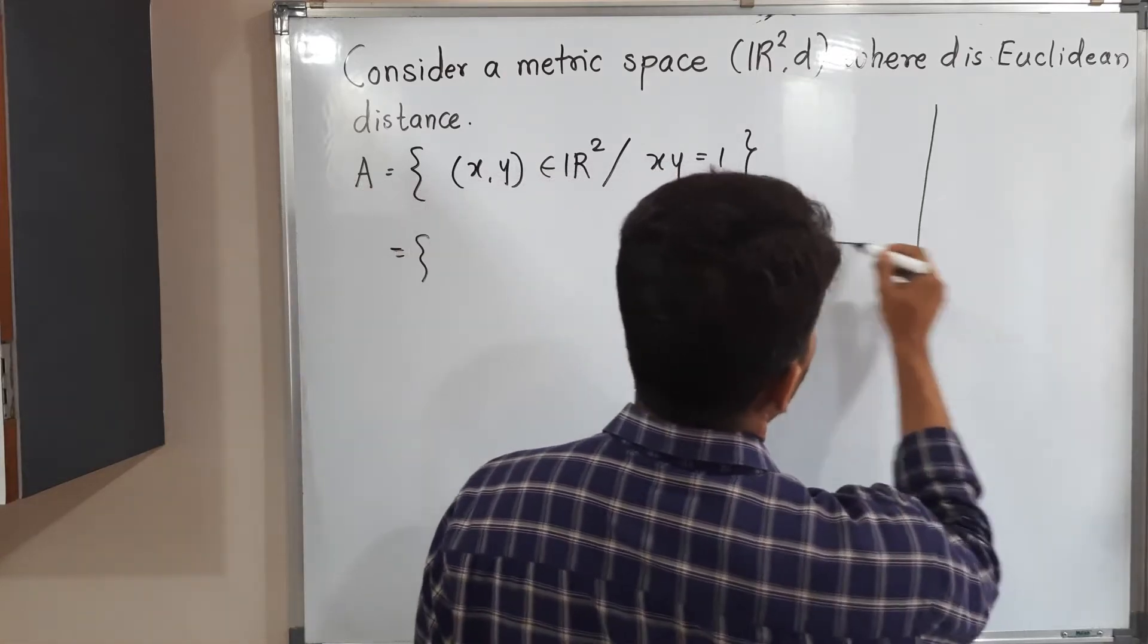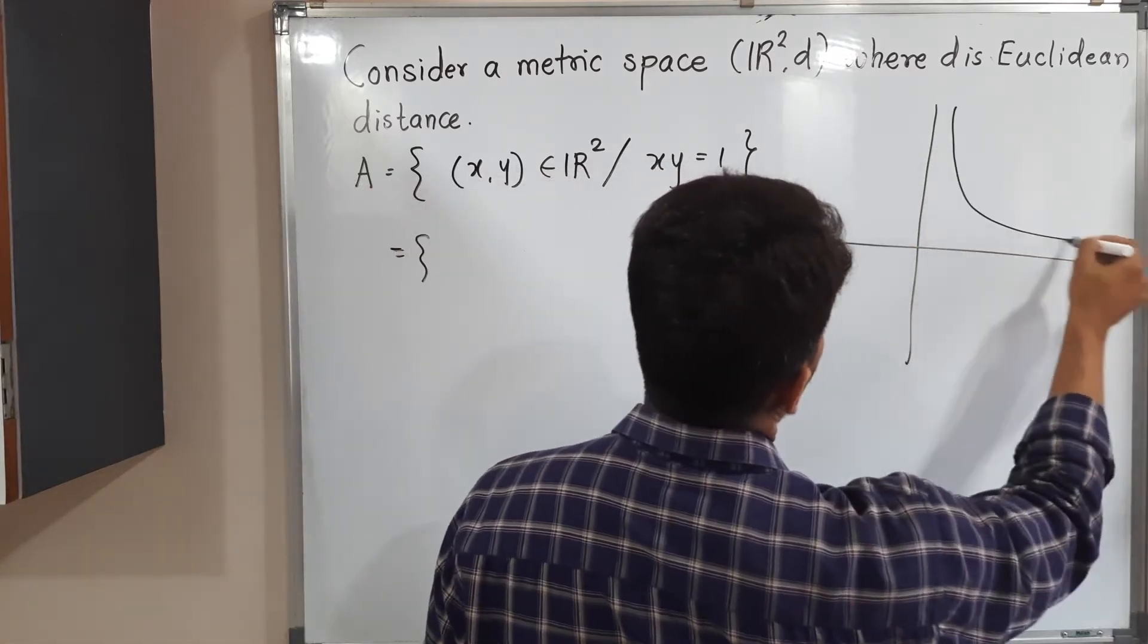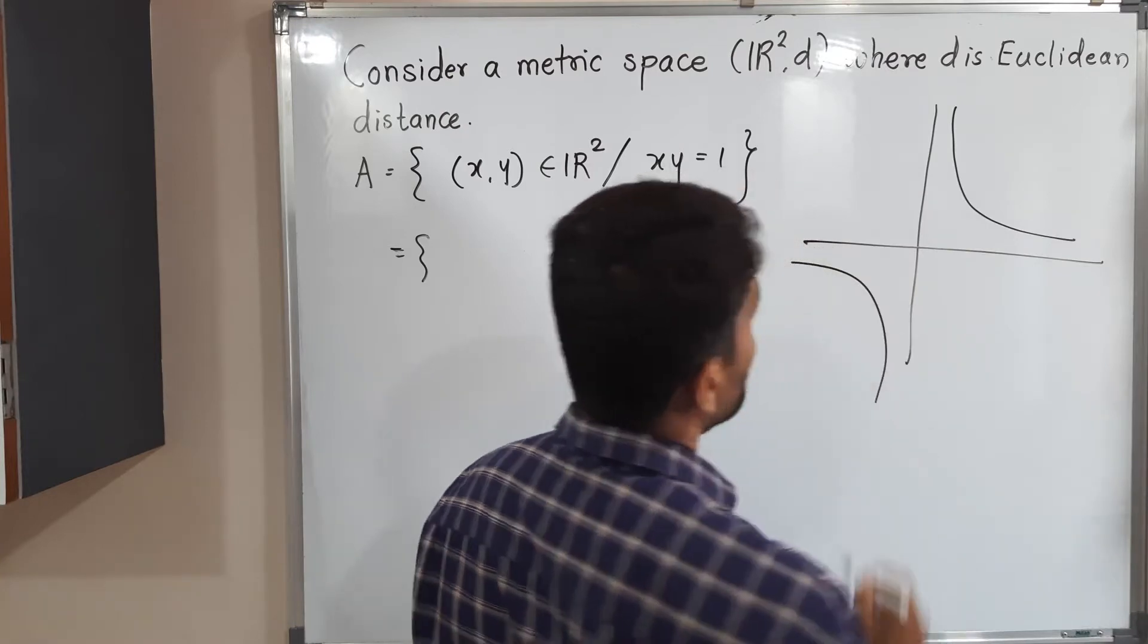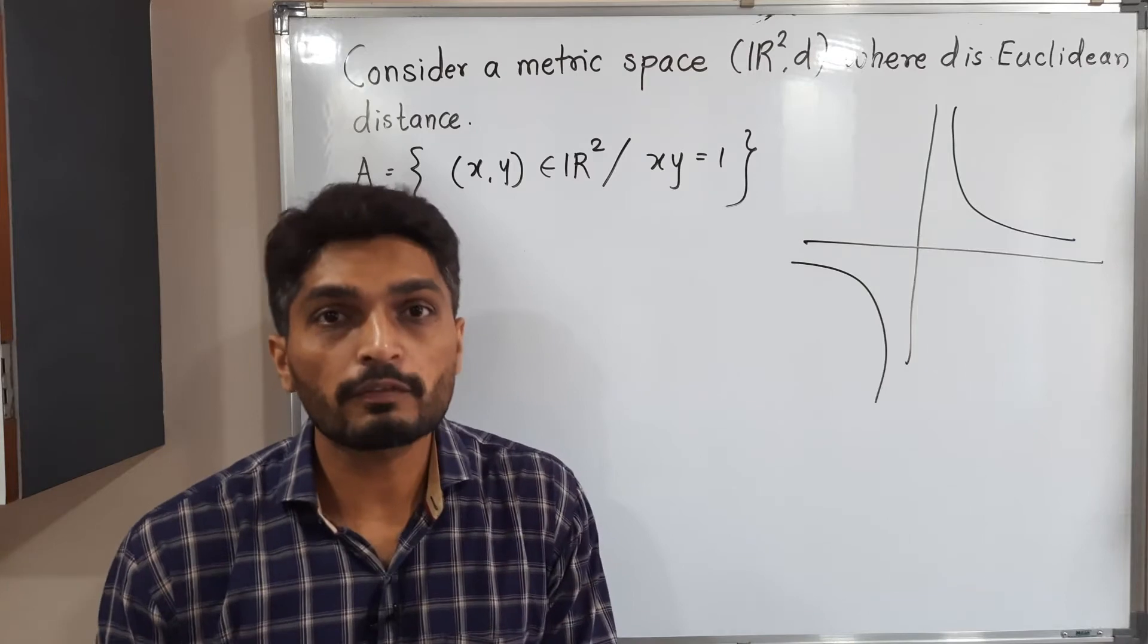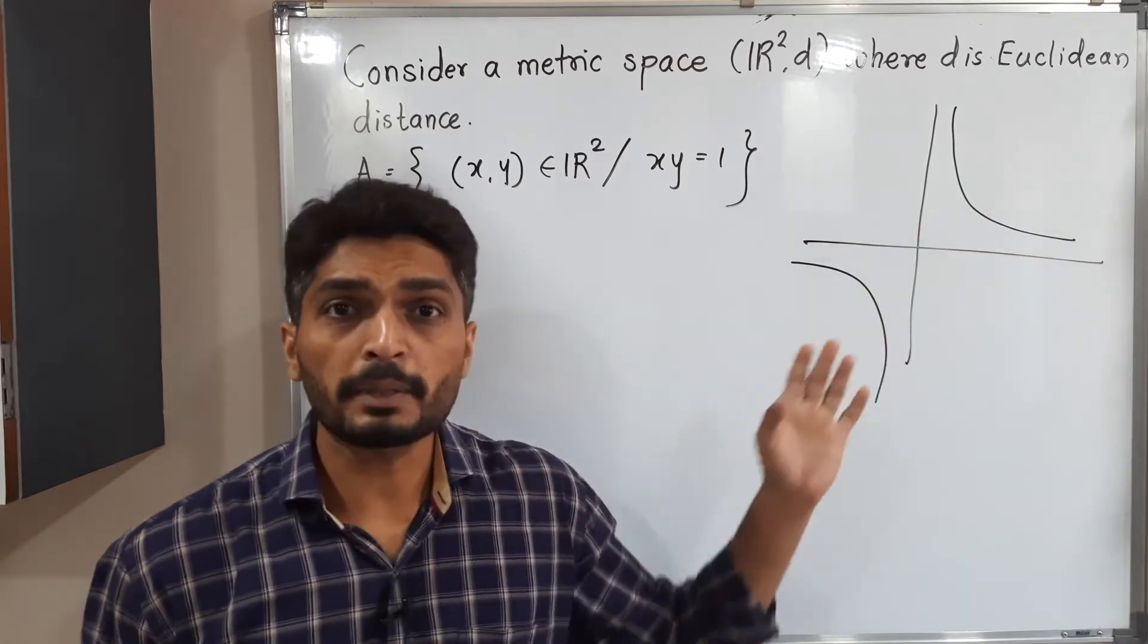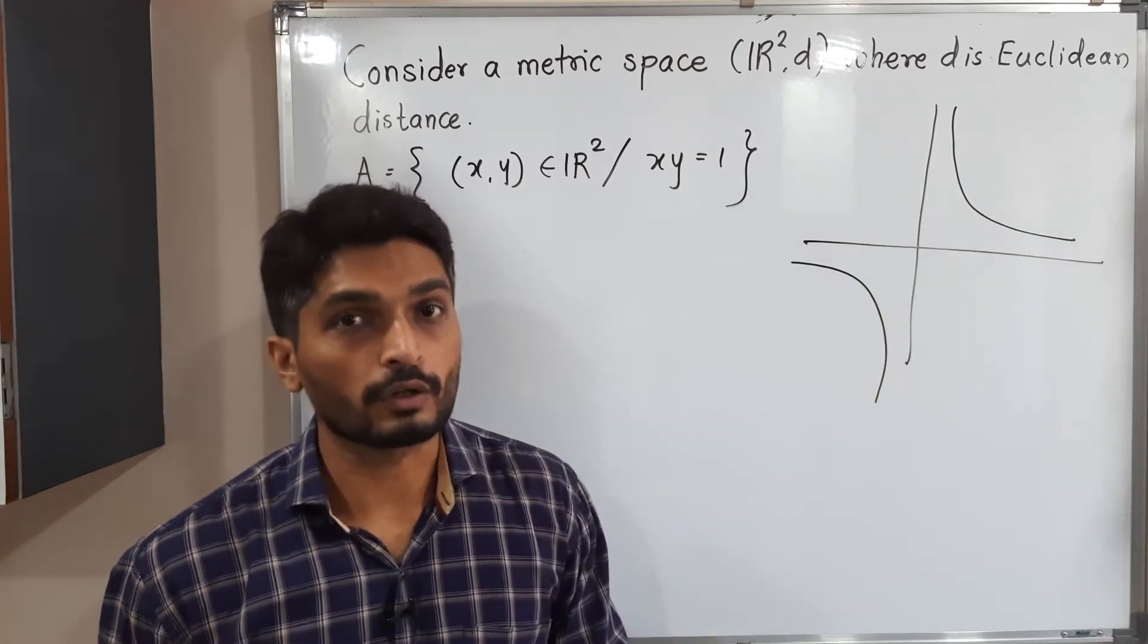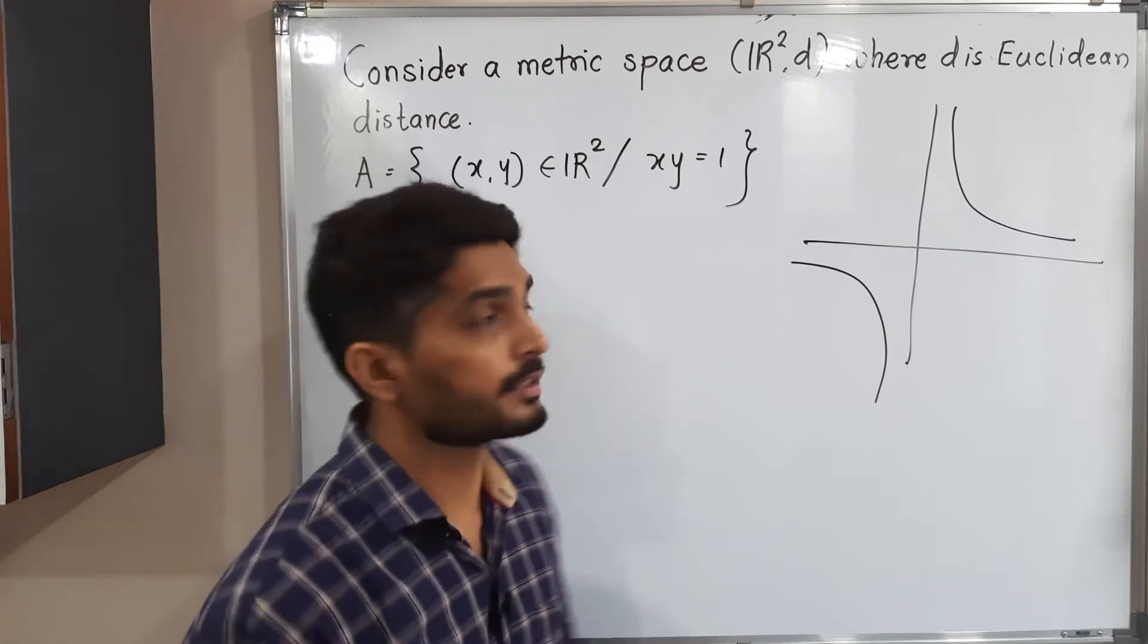I will draw the hyperbola here. So see this is a rectangular hyperbola. This hyperbola has two parts. One part of hyperbola lies in first quadrant and the second part of hyperbola lies in third quadrant. So that's why this set can be expressed in this way.